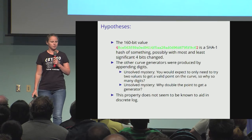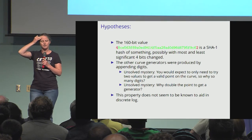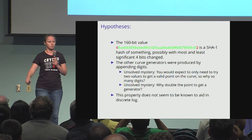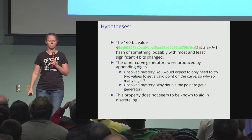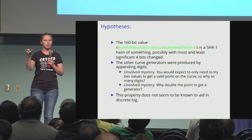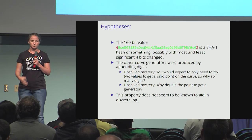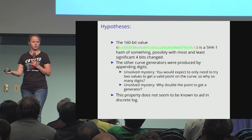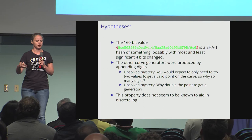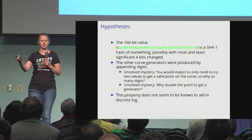This 160-bit value — we can hypothesize that it's a SHA-1 hash of something. If generated in 1999, that's a 160-bit hash function, so it seems natural. Maybe the most and least significant 4 bits have been changed, since they're different across all these points. The other curve generators seem to have been produced by changing those 4 bits and appending digits to the most significant bits. There's a mystery: you'd expect to only need to try 2 values to get a valid point on the curve — so why so many changes? And another unsolved mystery: why did they double the point to get a generator? They could have just used the original hash value, if it's a nothing-up-my-sleeve value.